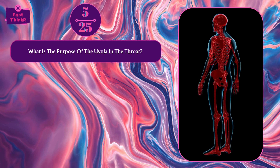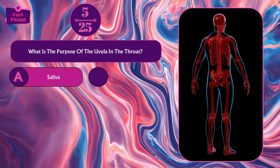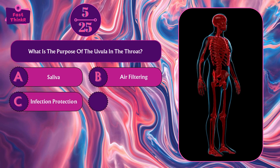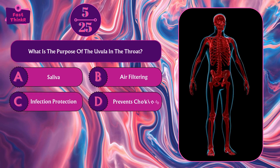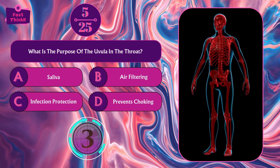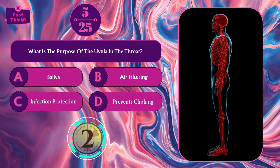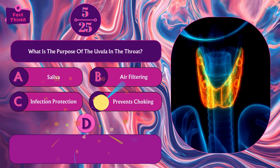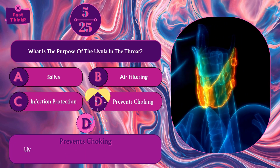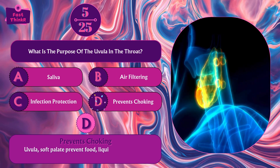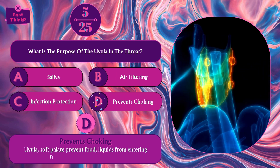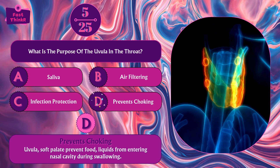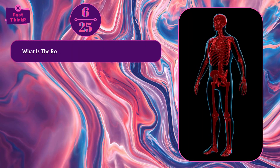What is the purpose of the uvula in the throat? Saliva, air filtering, infection protection, or prevents choking? Option D — prevents choking. The uvula and soft palate prevent food and liquids from entering the nasal cavity during swallowing.